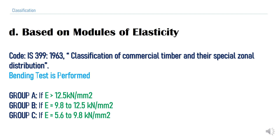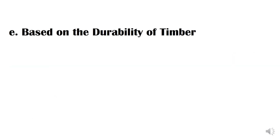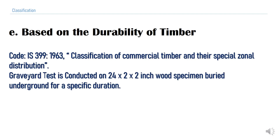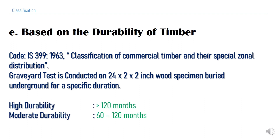These values are very important for exam purposes. The next classification is based on durability, under IS 399-1963. A graveyard test is conducted on a 24×2×2 inch wood specimen which is buried underground for a specific duration to see how well the wood survives. High durability timber sustains greater than 120 months, moderate durability timber sustains between 60 to 120 months, and low durability timber lasts less than 60 months.